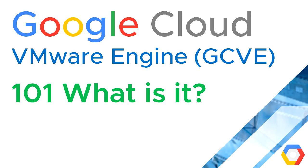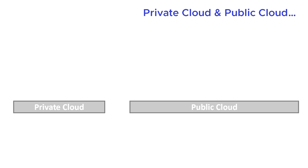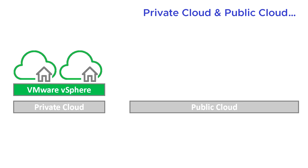Hi, I'm Jason Mears and this is Google Cloud VMware Engine 101 - what is it? I'm going to talk about private cloud and public cloud, a concept most people should be familiar with. Most organizations will have some form of VMware vSphere on-site or on-premise, usually one or two data centers for disaster recovery and high availability.